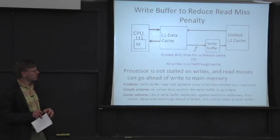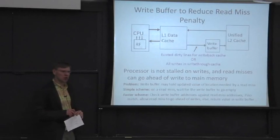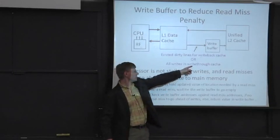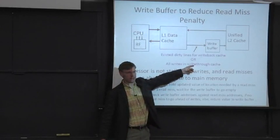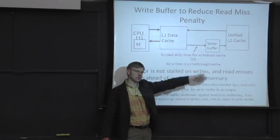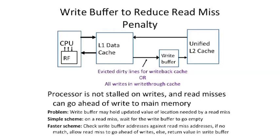So that's the first half of write buffers. The second reason we want a write buffer is if we have a write-through cache. We've been talking about write-back caches, which introduce victims. But in a write-through cache, every single store gets written into the L1 data cache and also into the next level of cache. One of the challenges is you might not have enough bandwidth into the L2 to take in every single store that occurs.